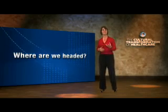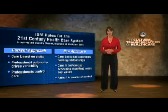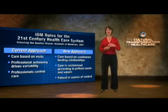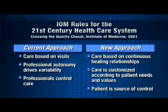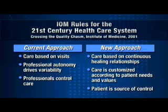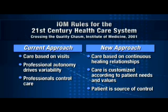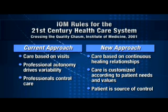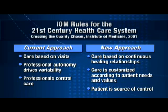So what is the answer? It's interesting that the VA is not the only institution calling for this kind of change. If you look at the Institute of Medicine — back when they did their Crossing the Quality Chasm, published in 2001 — they defined our current approach as care based on visits, and described the new approach where we need to be: care that is based on continuous healing relationships. I love all those words — continuous, not reactive — healing relationships. To shift from professional autonomy driving variability, to care that is customized according to the patient's needs and values. And finally, to shift from where the professionals control the care, to where the patient is the source of control.